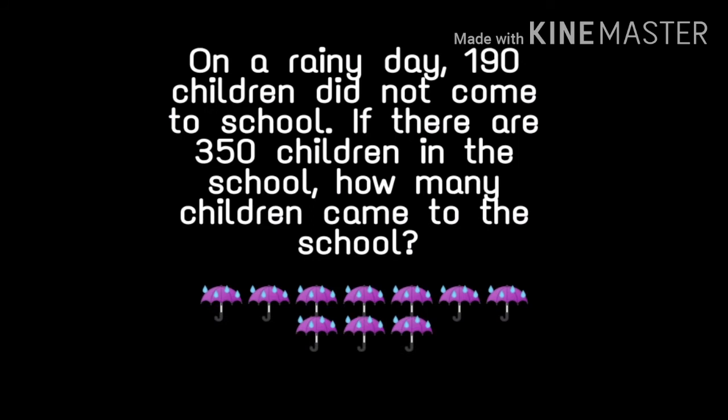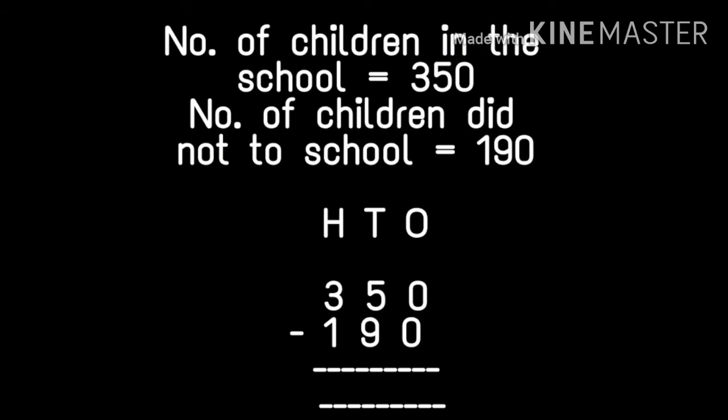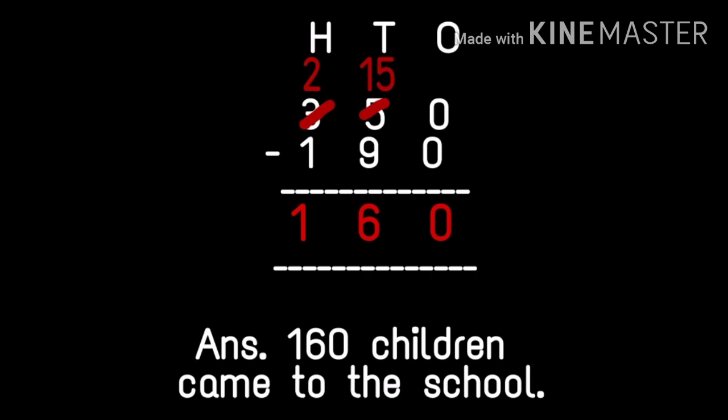Now another question: on a rainy day, 190 children did not come to school. If there are 350 children in the school, how many children came to school? We know the total number of children in the school and how many did not come. We have to find the number of children who came. First statement: number of children in the school is equal to 350. Second statement: number of children who did not come is equal to 190.